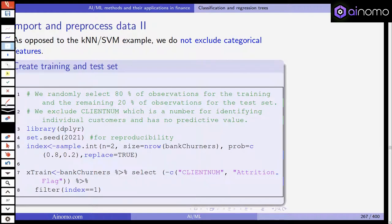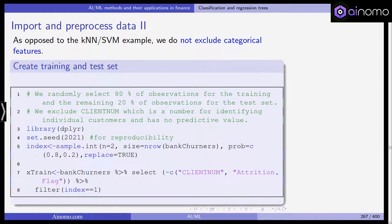Opposed to the k-nearest neighbor and SVM example, we do not exclude categorical features. We can actually work with them here. We create the training set and the test set. We randomly select 80% of the observations for the training set and the remaining 20% are included in the test set. We exclude the client number, which is a number for identifying individual customers with no predictive value because it doesn't carry any economic information. We use the setseed command to be able to replicate the results.